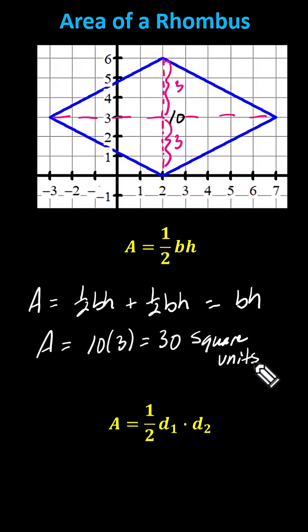There's actually a special formula for the area of a rhombus, which is the area equals one-half times d₁ times d₂, where d₁ and d₂ are the two diagonals. Let's find the area this way to make sure we get the same result.